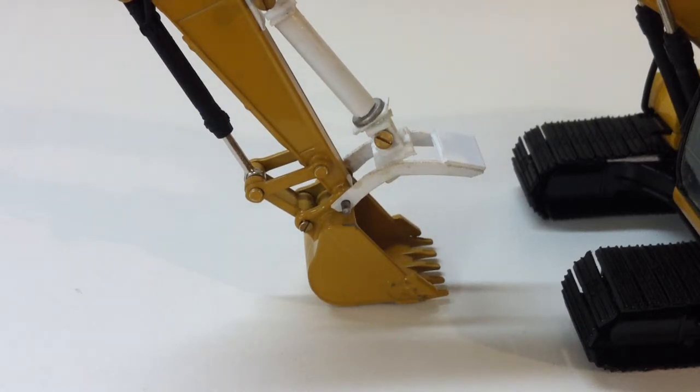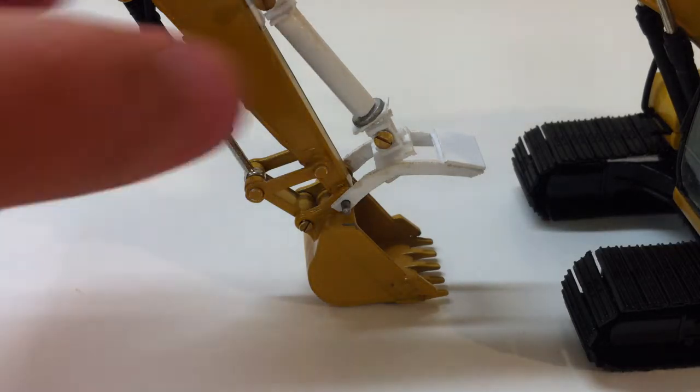Hi, Pillar143 here. I have a special video here for you today. I'm going to be showing you my custom thumb that I made for my 1:50 scale CAT 323DL. To start off, it is made out of plastic, aluminum rod, and some brass screws.